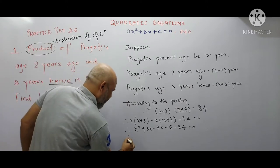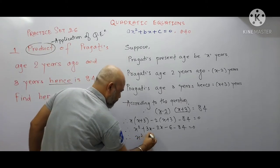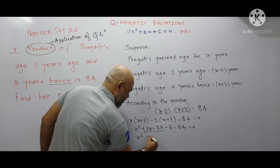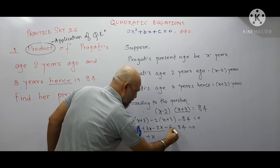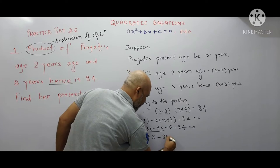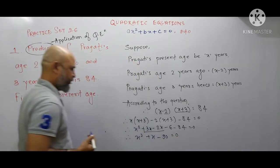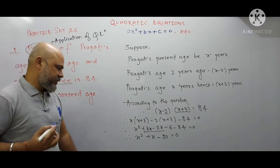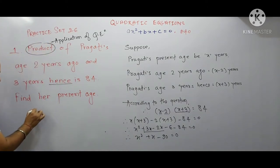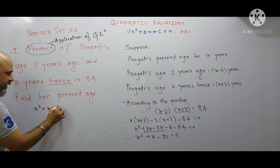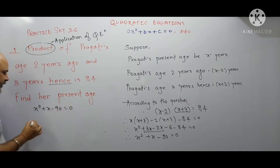Simplifying: x² plus x (since 3x minus 2x equals x), minus 6 minus 84 equals minus 90. So the quadratic equation is x² + x − 90 = 0.